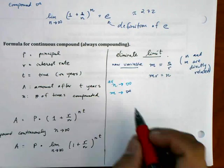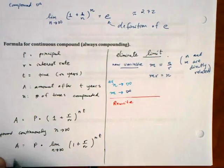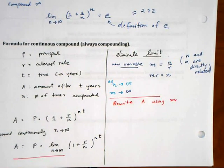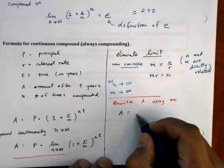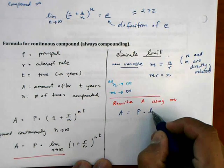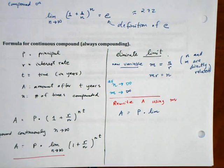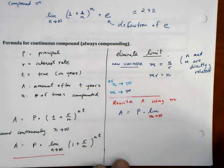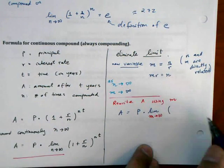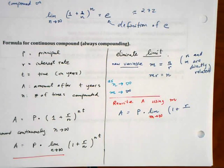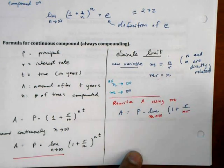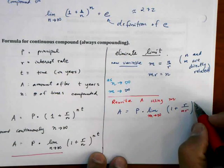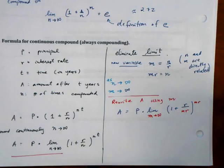And now, again, this is weird. So now we're going to rewrite this equation here, A, using M. So A now is P times the limit. And I'm going to rewrite everything in terms of M now. Instead of N approaching infinity, I'm going to have M approach infinity. And this is 1 plus R over N. But remember that N is just MR, raised to the NT power. But again, N is just MR. So this is MR to the T, or MRT.